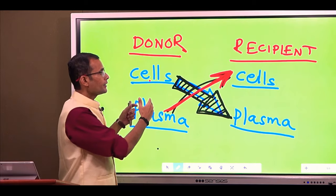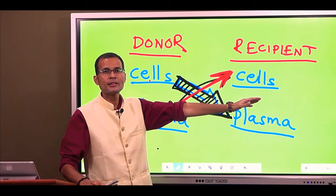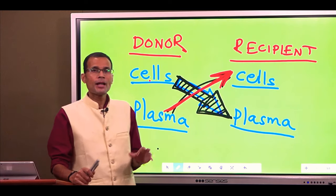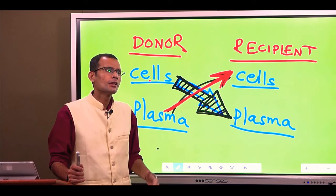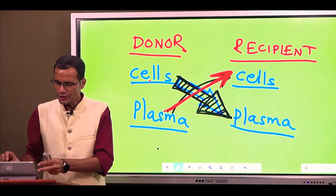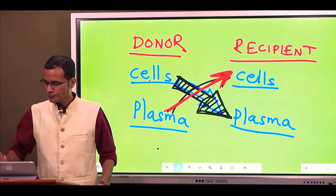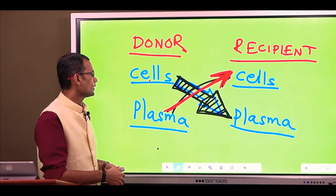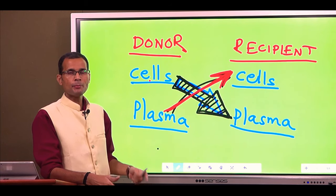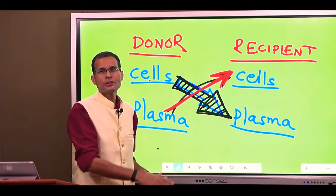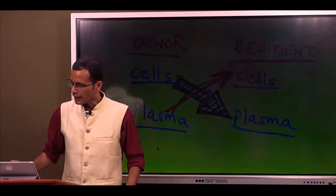When minor cross matching is positive, it means donor plasma contains some antibodies against the antigens on the recipient's cells. Looking at the emergency of the situation, you may still go ahead even if the minor cross matching shows agglutination. But in major cross matching — donor cells and recipient plasma — if you see the reaction in the sample, that transfusion is not advisable. That is the concept of blood grouping and cross matching.